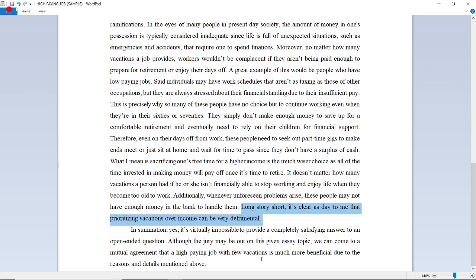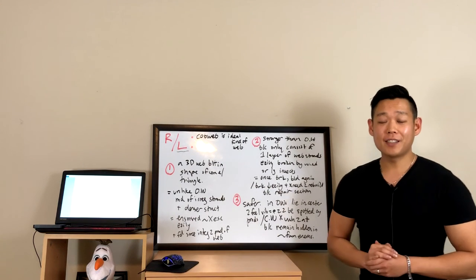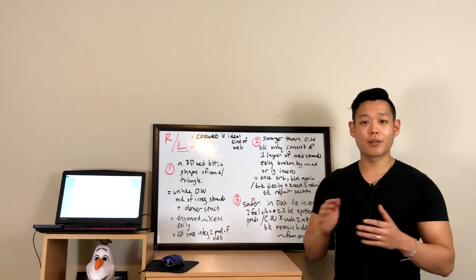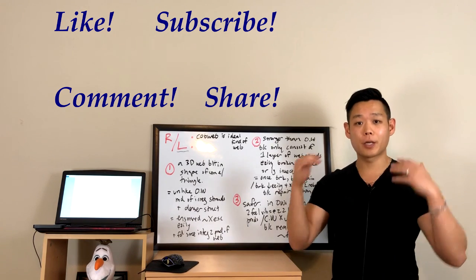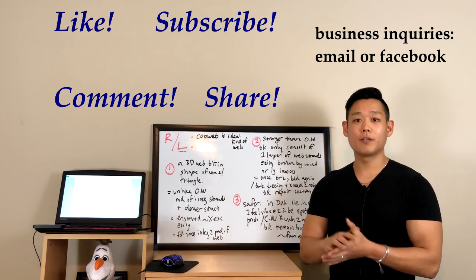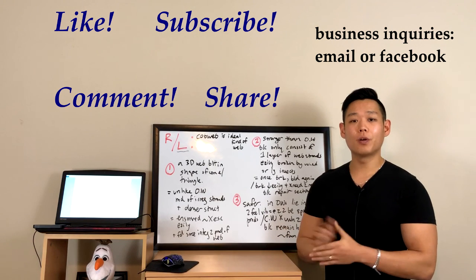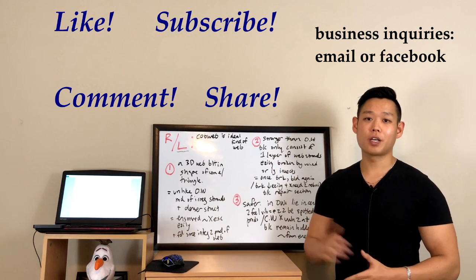For the conclusion, the key sentence to verify is: 'We can come to a mutual agreement that a high paying job with few vacations is much more beneficial' — make sure it's a complete, independent clause. That wraps up today's video. If you enjoyed it and found the sample essays helpful, please like the video, subscribe to the channel, ask questions in the comments, and share with friends and family. The next video will focus on independent speaking questions — task one and task two — so stay tuned if those are giving you difficulty. Peace out.